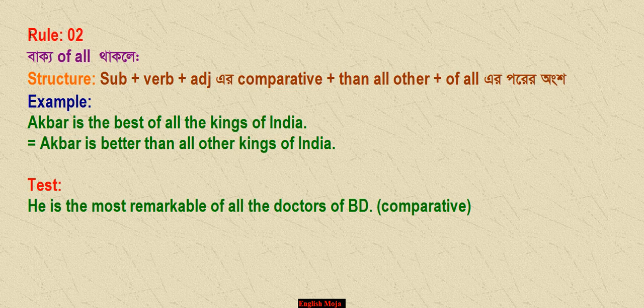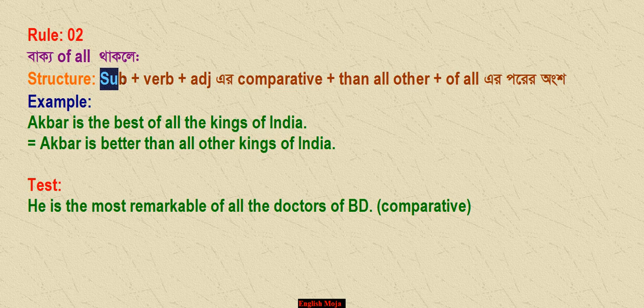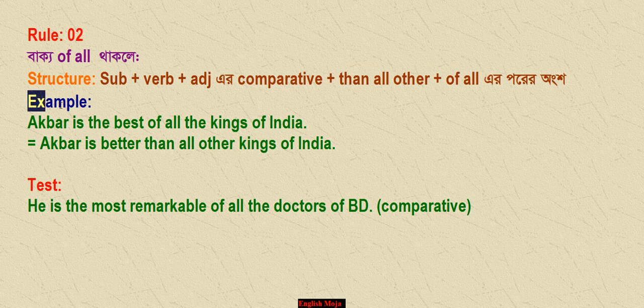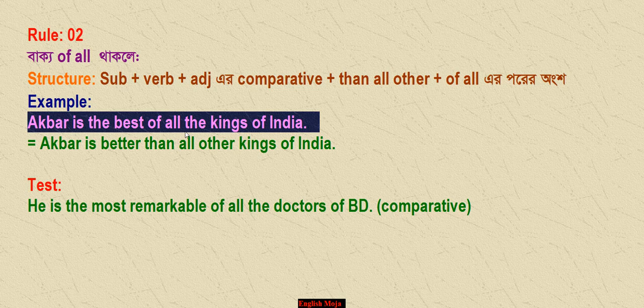This is the next rule — Rule 2. Rule 2 is the second subject with the same structure. The first subject, then verb, then adjective, then comparative. Then 'all other.' To get the best of the world — the best of the king of India. The best of all kings. The first subject and the best of all kings.